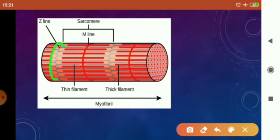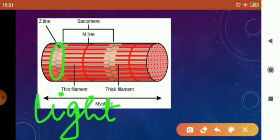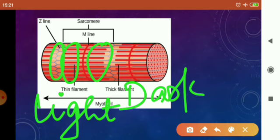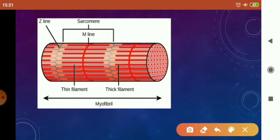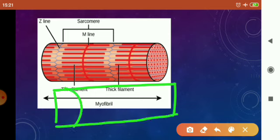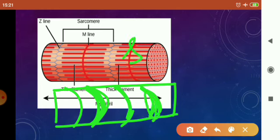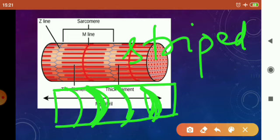The areas where only thin filament is present are called light bands, and the areas where both thin and thick filaments are present are called dark bands. Therefore, this striated muscle fiber appears with alternating thin and thick filaments — thin, thick, thin, thick — and that is why we call this muscle fiber a striped muscle.